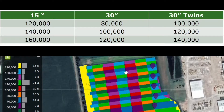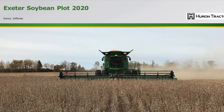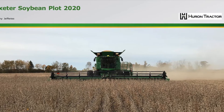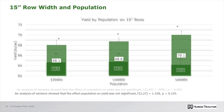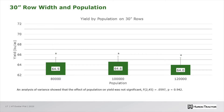Let's take a look at the interaction between row width and seeding population, starting with the 15-inch rows. On the left column 120,000 seeds per acre were planted, in the center 140,000, and on the right 160,000 seeds per acre. As we can see in the chart, there was no statistically significant yield bump to the enhanced population — even at 120,000 seeds per acre we optimized yield.